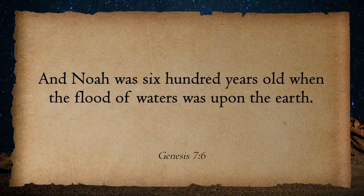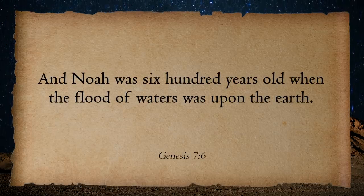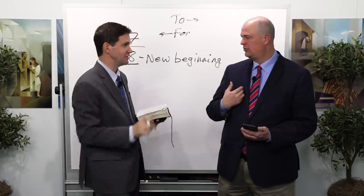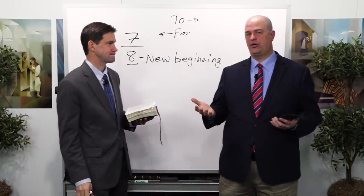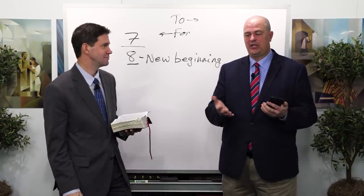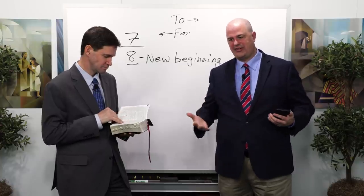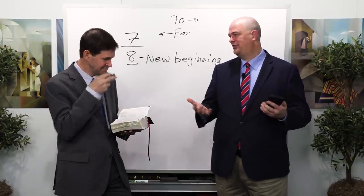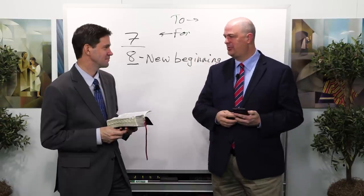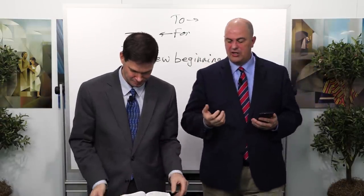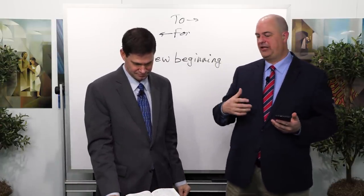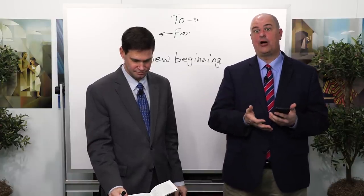Verse 6: Noah was 600 years old when the flood of waters was upon the earth. They love the nice round numbers, the ability to encapsulate a big passage of time in something fairly round. In a cisagesimal system where it's like base 60, 600 would be that nice round number. We're not saying Noah wasn't 600 years old — we're just saying that the Bible writers may have been using these numbering systems to convey something about his age, just like today we say 'that person's a century old.' The flood was forty days upon the earth, the waters increased and bore up the ark. The waters prevailed for a hundred and fifty days — again, using that cisagesimal counting.